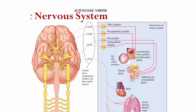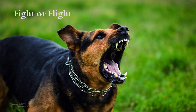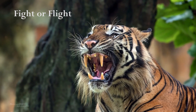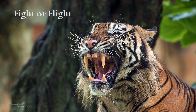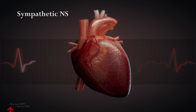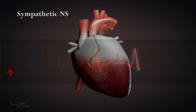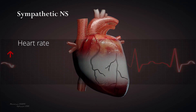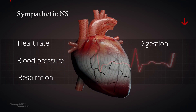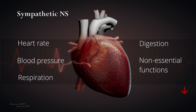The sympathetic nervous system is responsible for the fight-or-flight response, which is activated in response to stress or danger. When activated, it causes an increase in heart rate, blood pressure, and respiration, and a decrease in digestion and other non-essential functions.